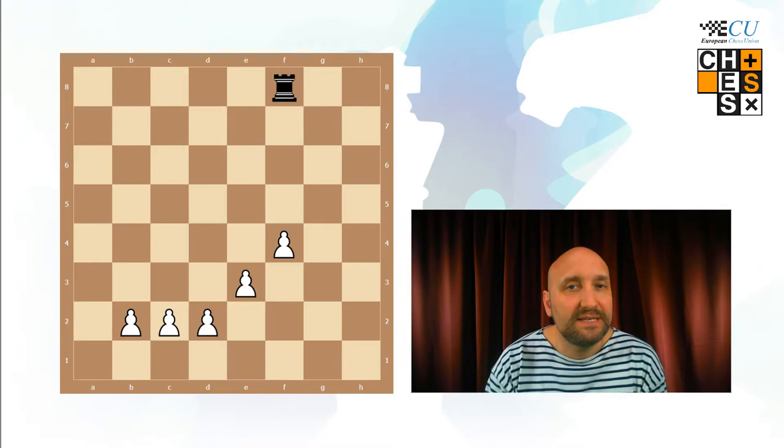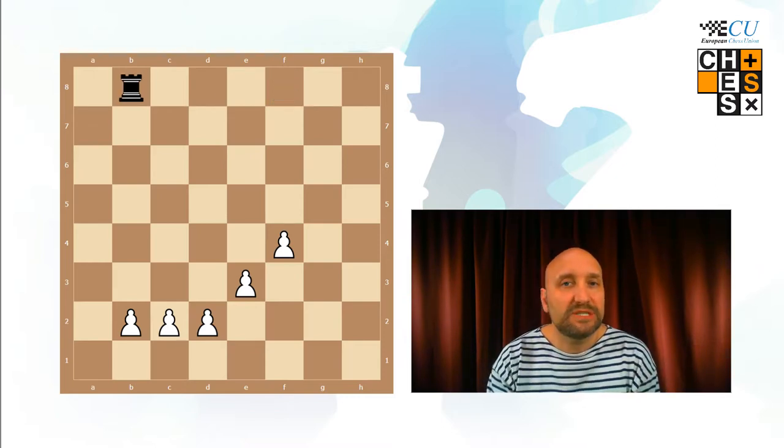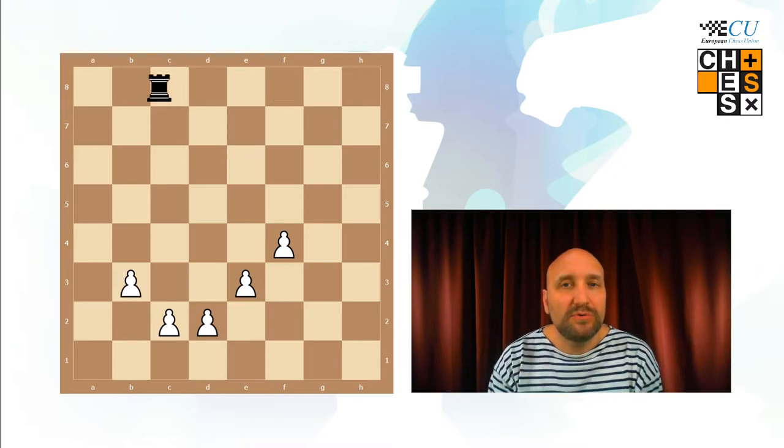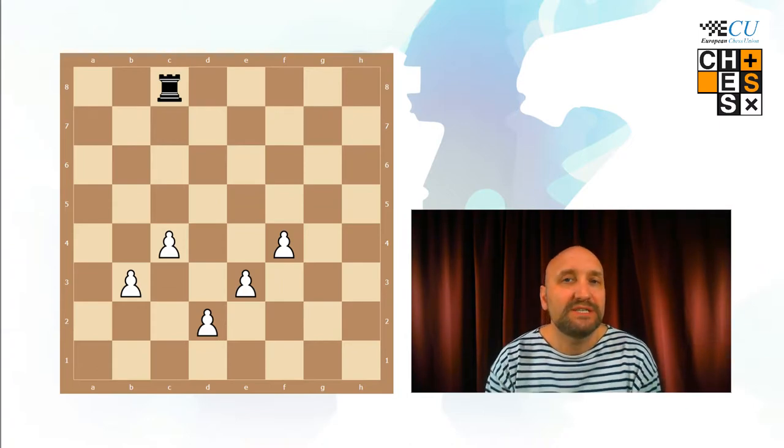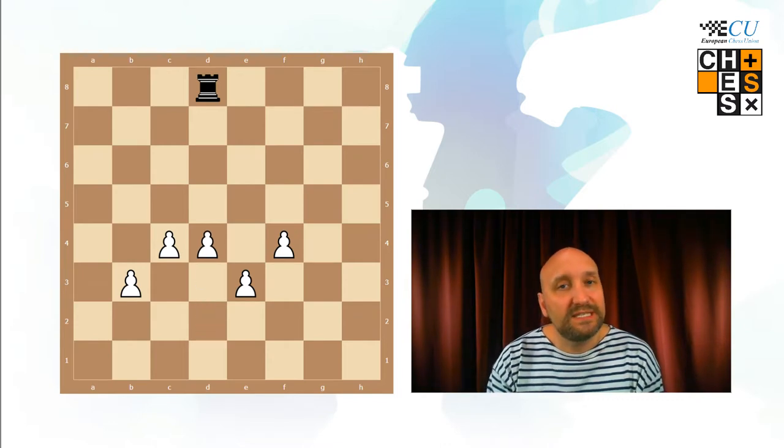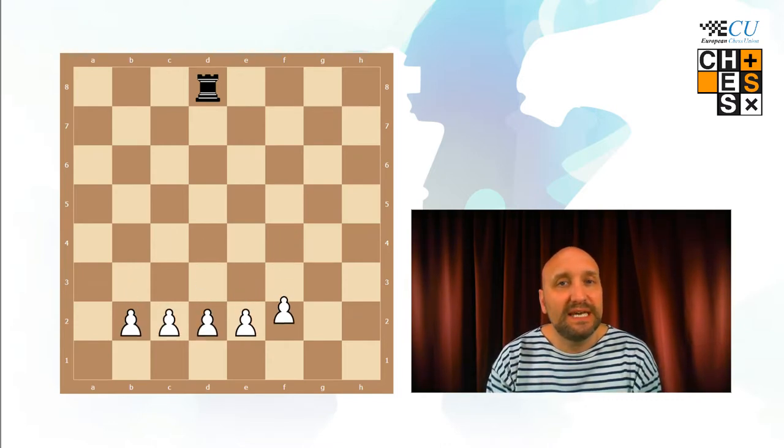Like here, white can defend making a chain and the black rook will try to attack the pawns. But you can see that white is just defending by building a chain all the time. And it's not so effective as if we take from the beginning again like this.